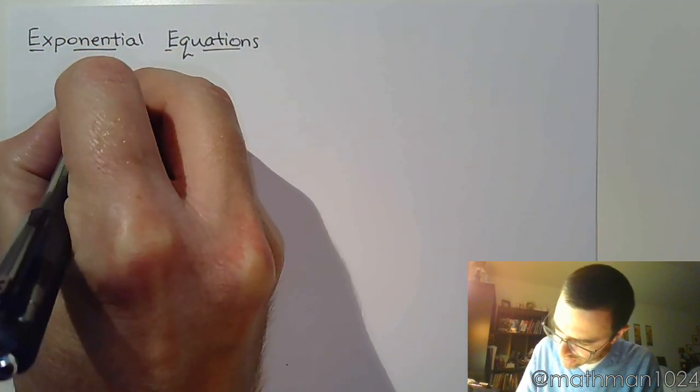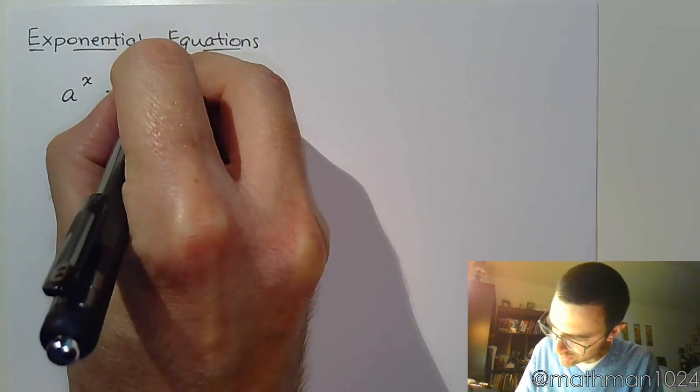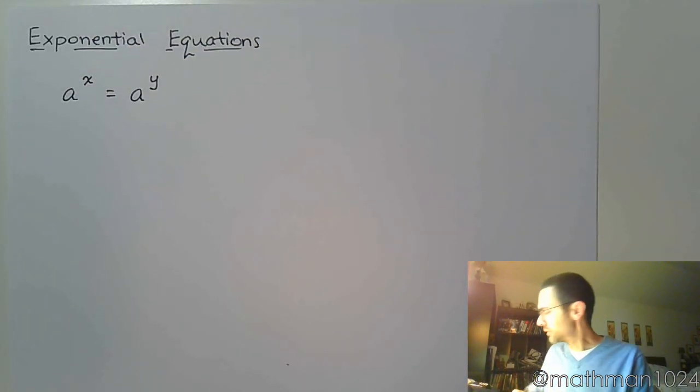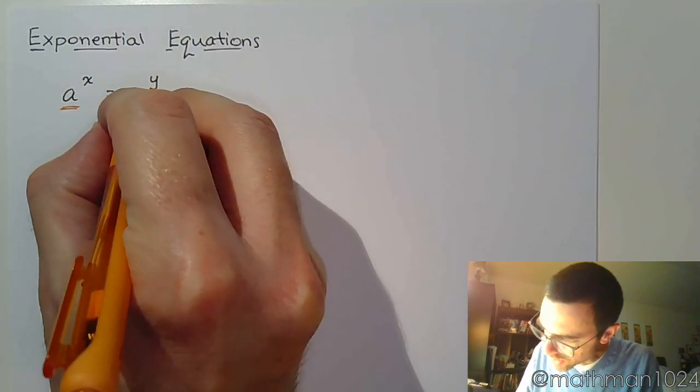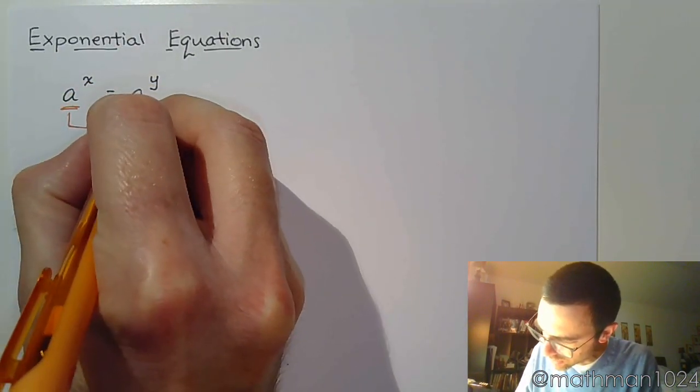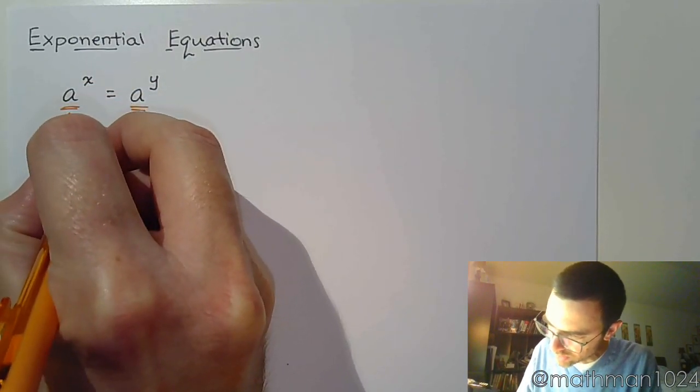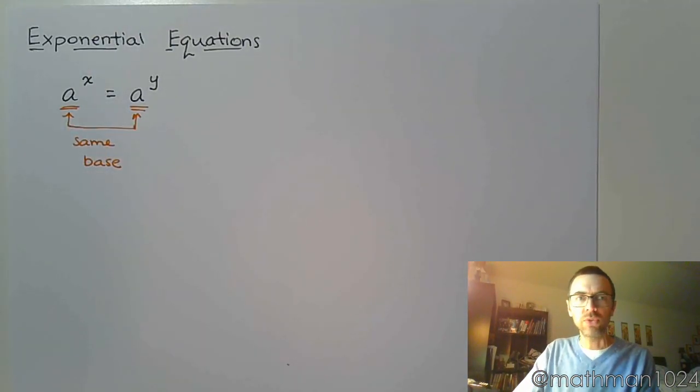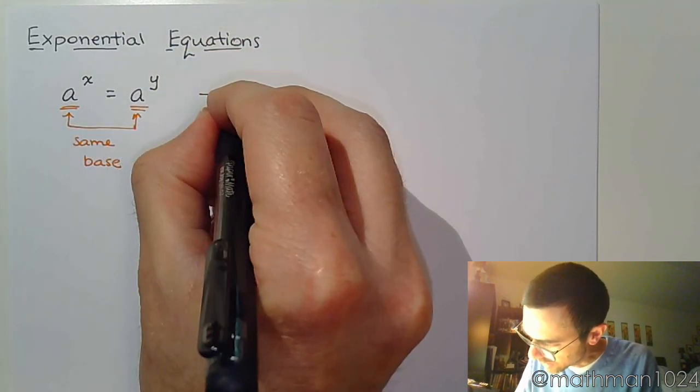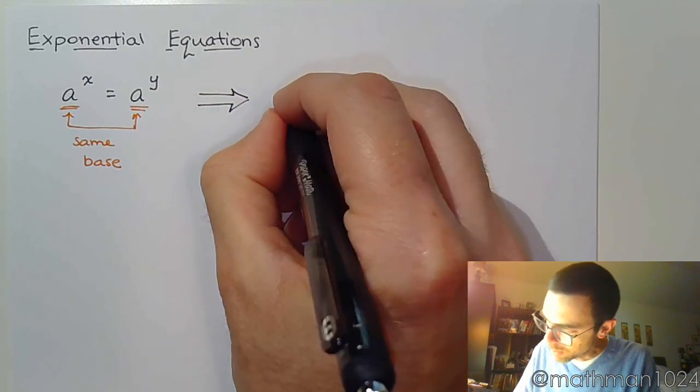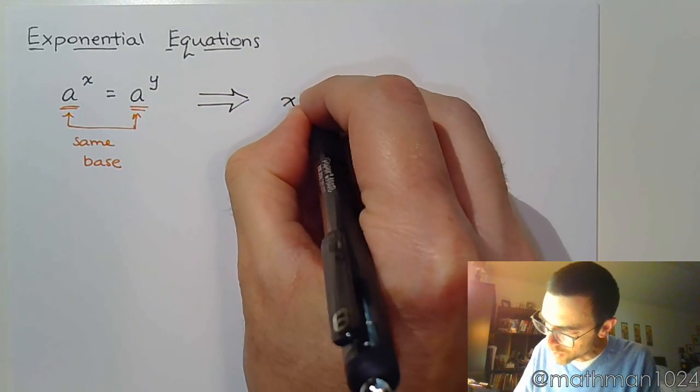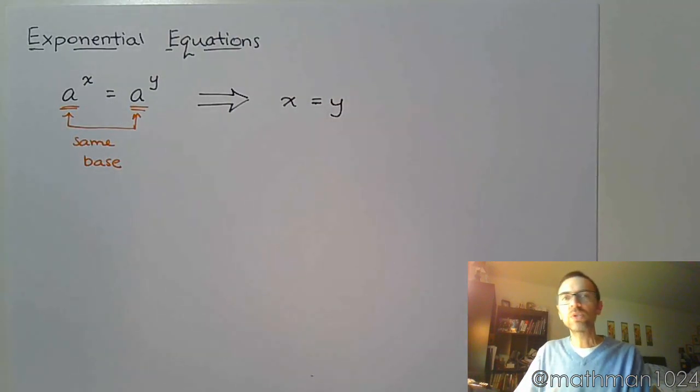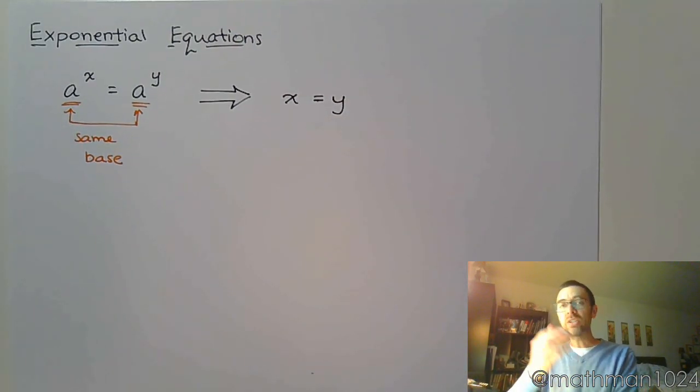as long as these have the same base, then we can say that their powers are equal. So as long as we can rewrite our equation, rewrite each side of the equation to have the same base, then we can just set those powers equal to each other.